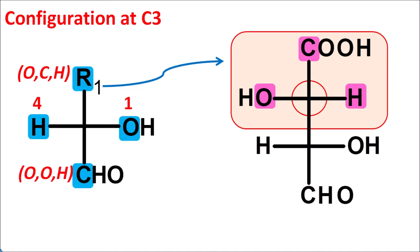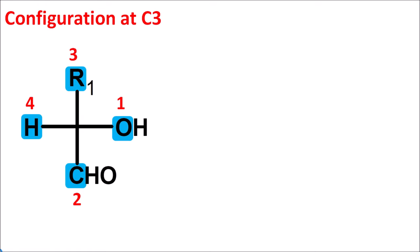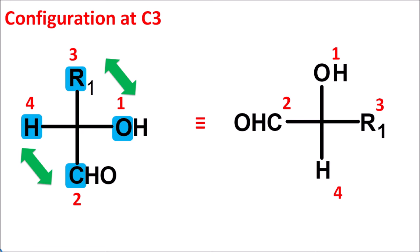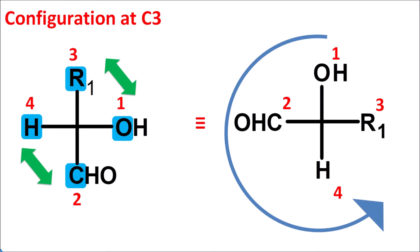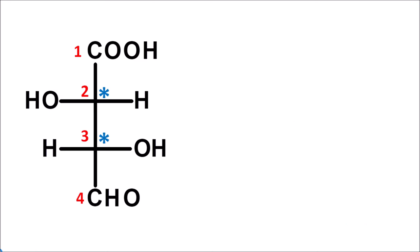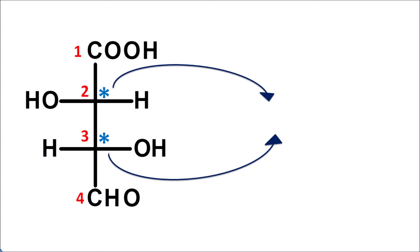Which should be given preference? Since oxygen has the higher atomic number, CHO should be given preference and is assigned priority order 2, and the R1 group has priority order 3. Within this structure, the priority order is now established. Again, the lowest priority group is not on the vertical line but on the horizontal line. So, just like before, we make parallel transitions to get the corrected arrangement. Travelling from 1 to 2 to 3 gives an anti-clockwise direction again, so it shows S configuration. Since we are assigning the configuration at C3, it is indicated as 3S. To summarize, this structure has two chiral carbons and the configuration at C2 and C3 are denoted as 2S, 3S — both second and third carbons show S configuration.